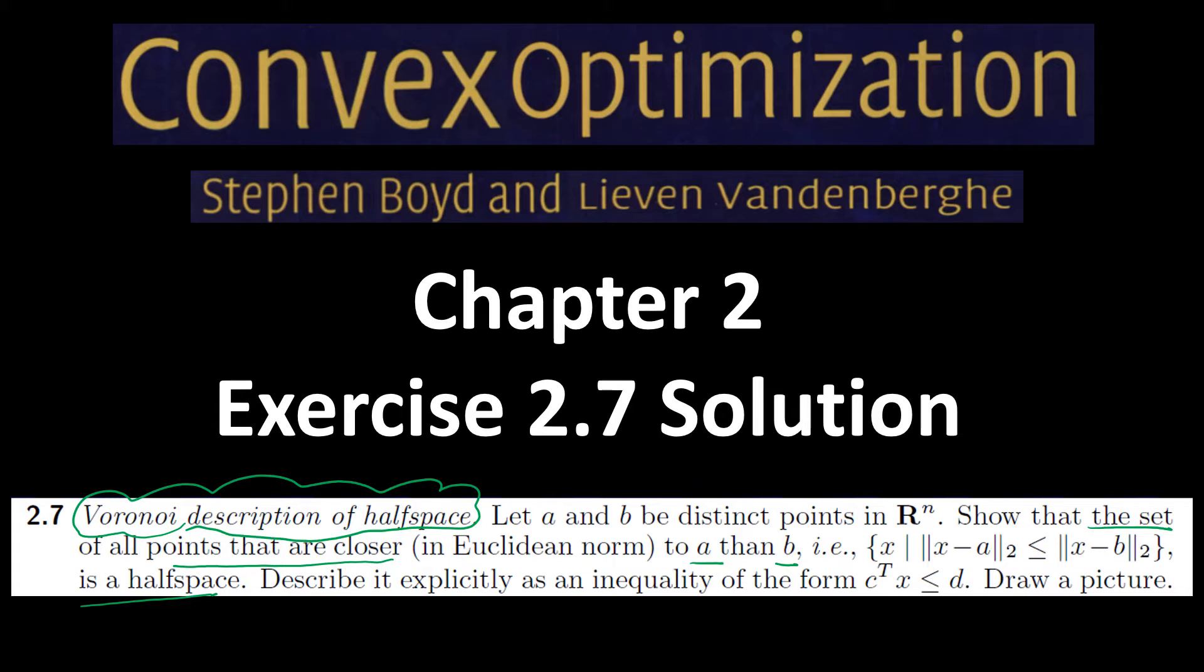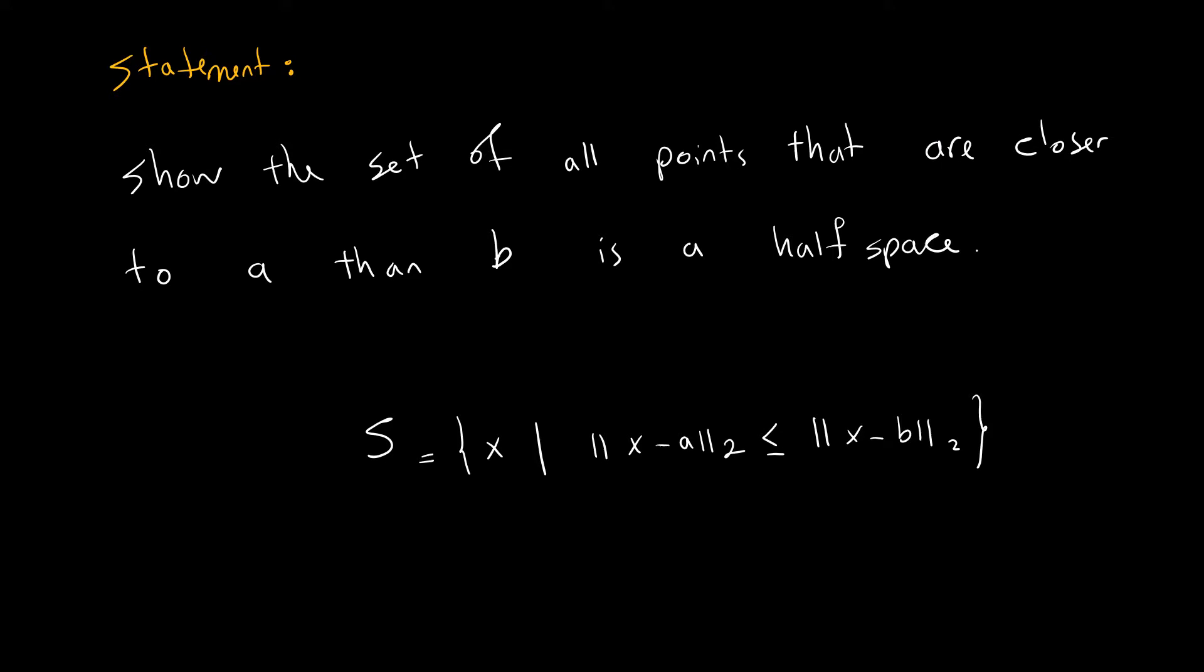Okay, the statement asks us to show that the set of all points that are closer to a than b is a halfspace. Let me just characterize what we just went over as a set: the set of all points in R^n such that...